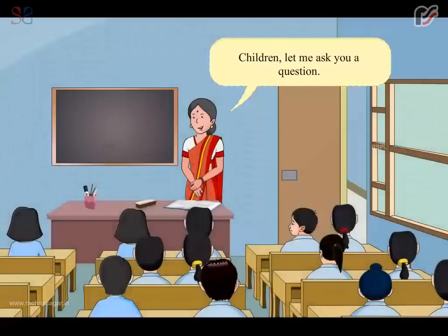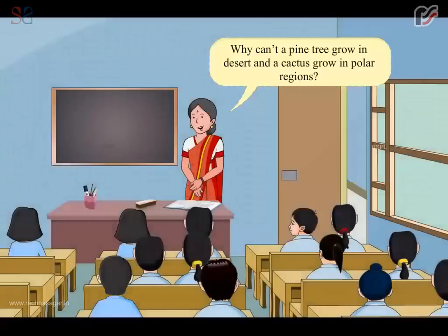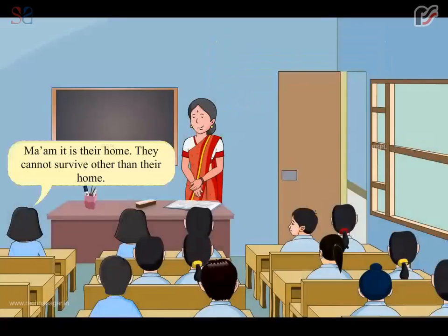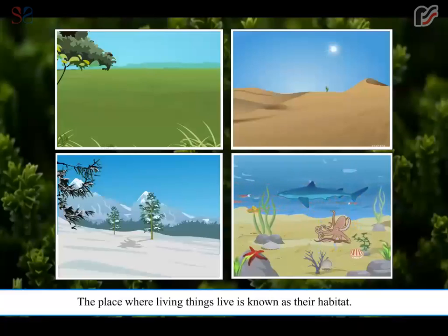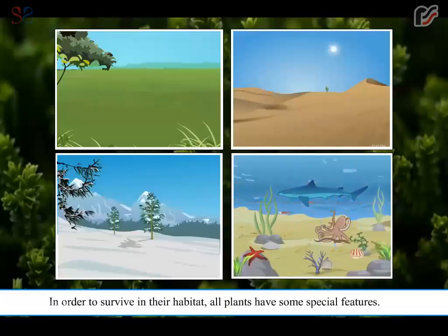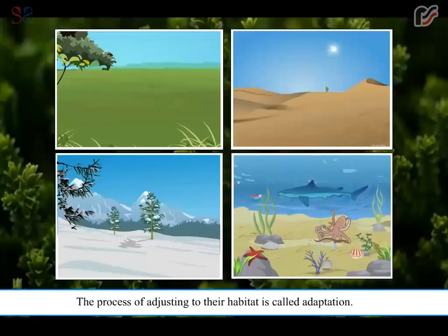Children, let me ask you a question. Why can't a pine tree grow in a desert and a cactus grow in polar regions? It is their home — they cannot survive other than their home. The place where living things live is known as their habitat. In order to survive in their habitat, all plants have some special features. The process of adjusting to their habitat is called adaptation.